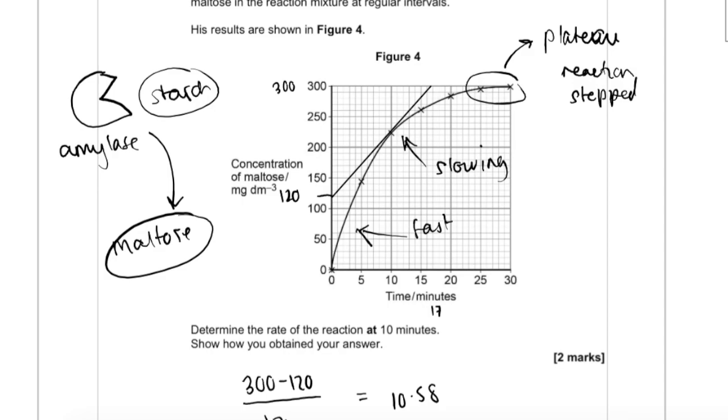But to actually get the marks here, we need to explain it. So I would start off at the start of the graph by saying initially, the concentration of maltose increases rapidly because there's lots of starch and you form lots of enzyme-substrate complexes, and therefore you're hydrolyzing it into maltose.